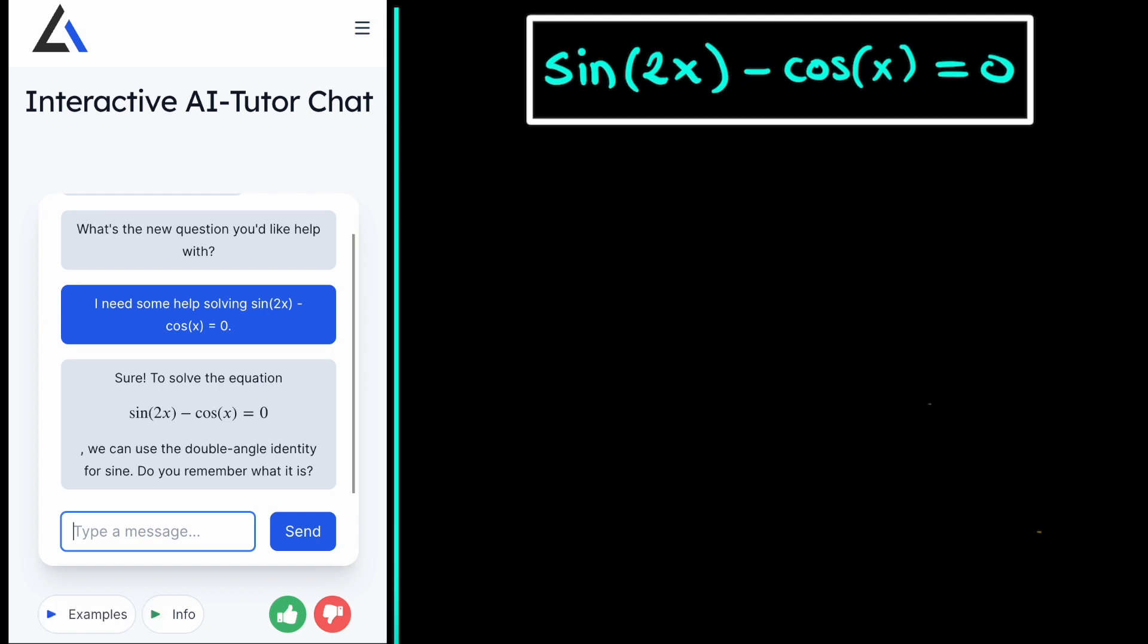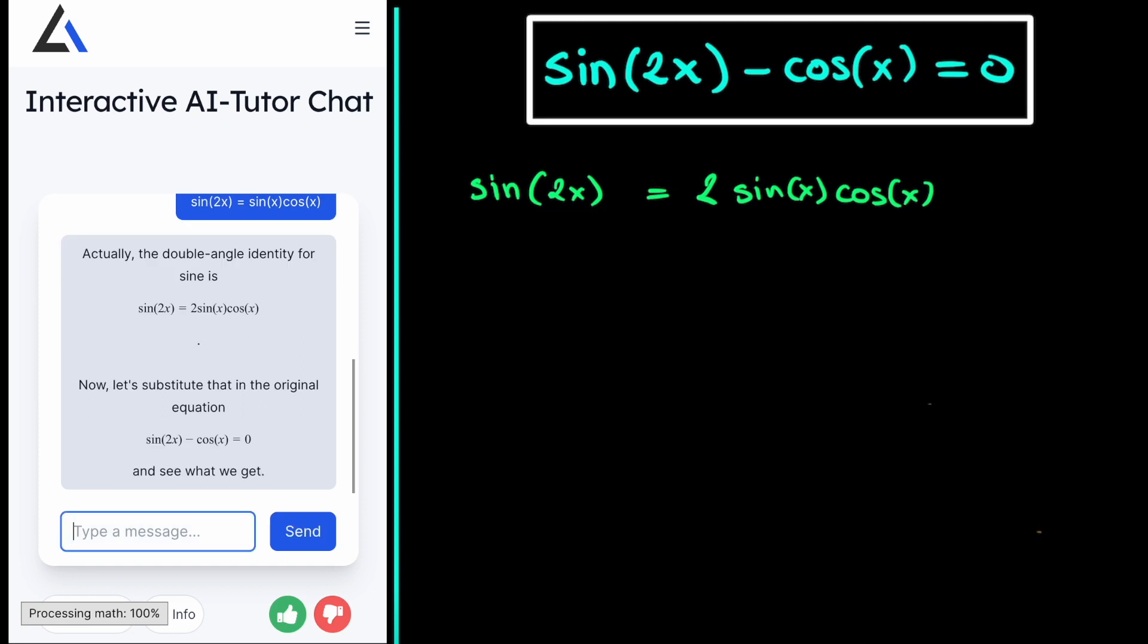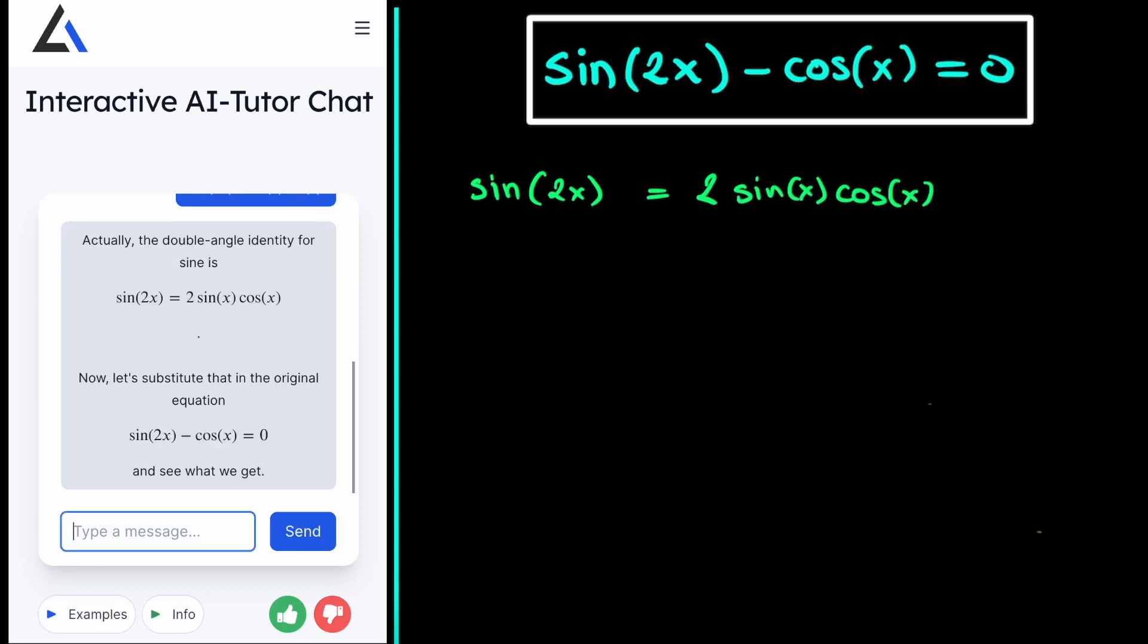Let's say that you indeed remember it and you say that the sine of 2 times x is equal to the sine of x multiplied by the cosine of x. So then you answer the AI Tutor with what you found and actually it corrects us here because it says that we forgot this factor of 2 in front of the sine of x cosine of x and this is indeed correct. The sine of 2x is equal to 2 times the sine of x multiplied by the cosine of x. Then it asks us to substitute this into our original equation.